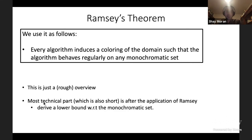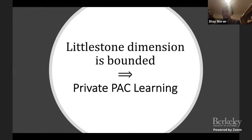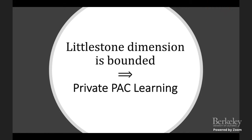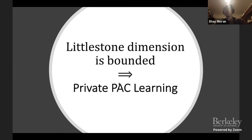The most technical part — which is also quite short — is deriving the lower bound with respect to comparison-based (regular) algorithms after applying Ramsey. Now let's discuss the second direction: if the Littlestone dimension is bounded, there is a private PAC learner.